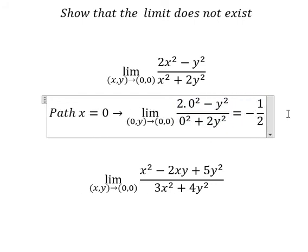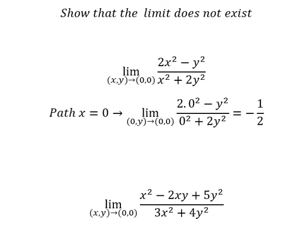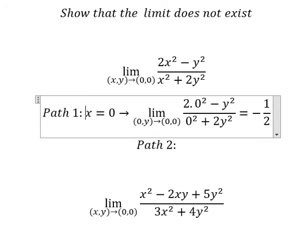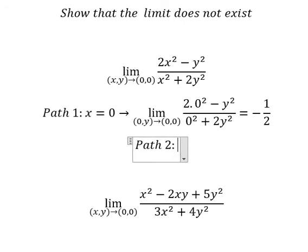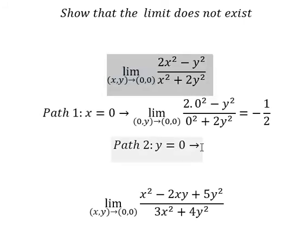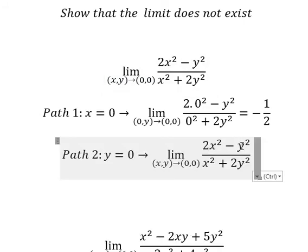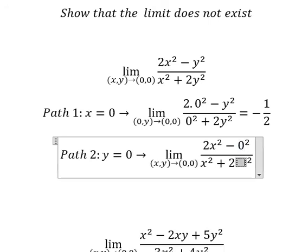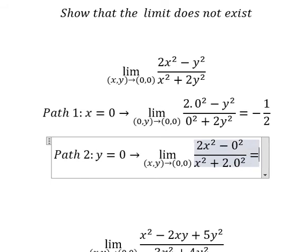Now let's go to path number two, which is y equals to zero. We put zero here and zero here. So we have 2x² divided by x², which gives us 2.